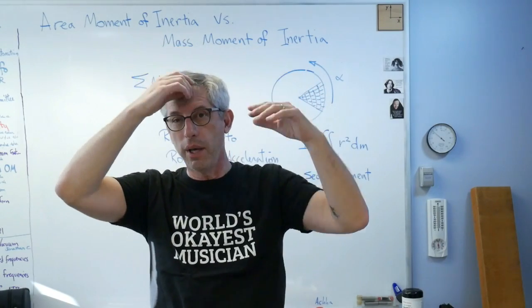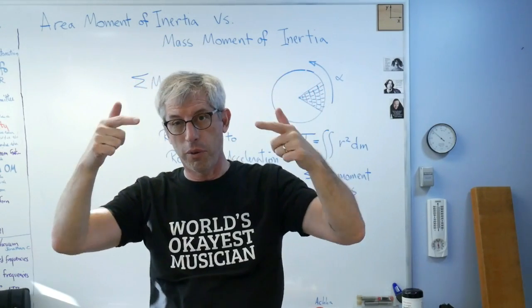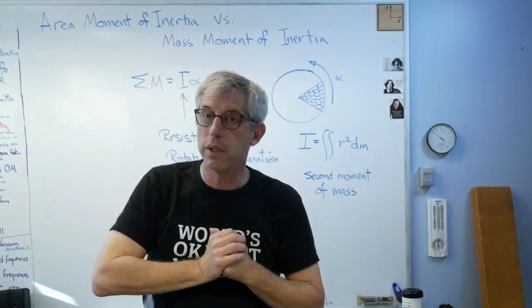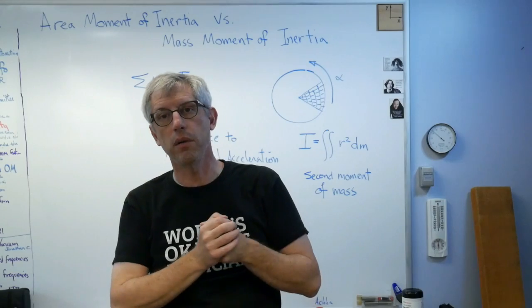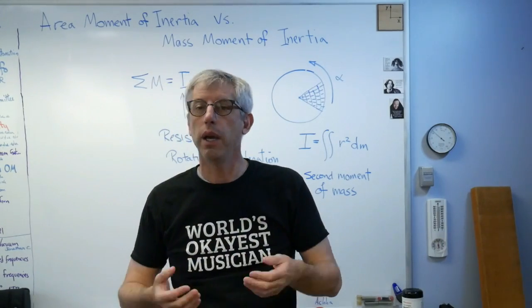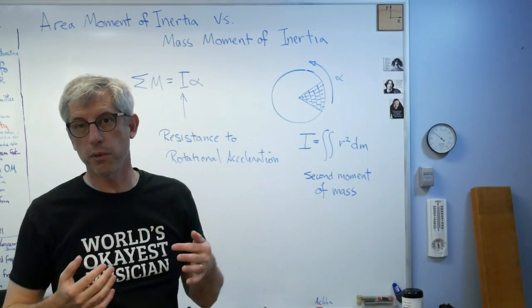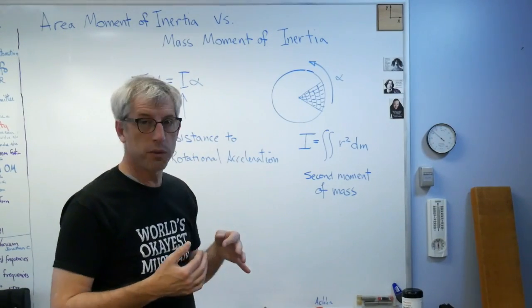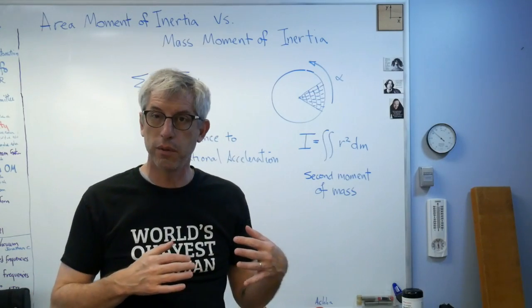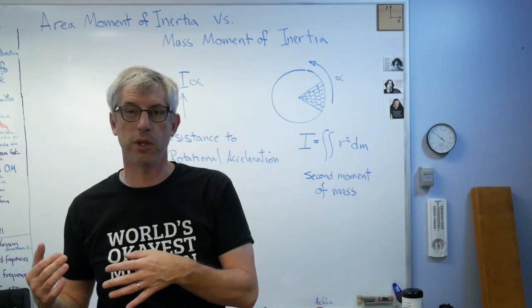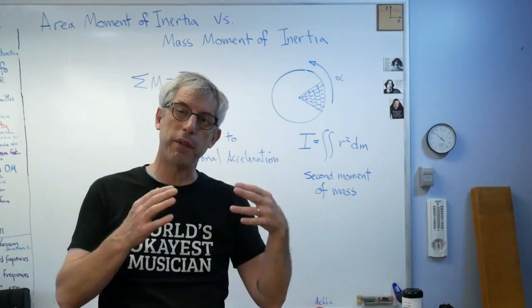So the big idea here is that's the area moment of inertia versus mass moment of inertia. The big idea is there's this thing called mathematical moment, and there's first moment, second moment, third moment. If you look at statistics, standard deviations and kurtosis are defined in terms of mathematical moments.